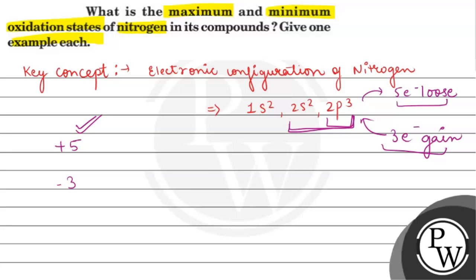Maximum +5 can be achieved because in the outer shell, we can lose 5 electrons. We can gain 3 electrons because the second shell has 2 subshells, S and P. In P, there are 3 orbitals available, and in each orbital, 2 electrons can be accommodated. So maximum 3 electrons can be gained.